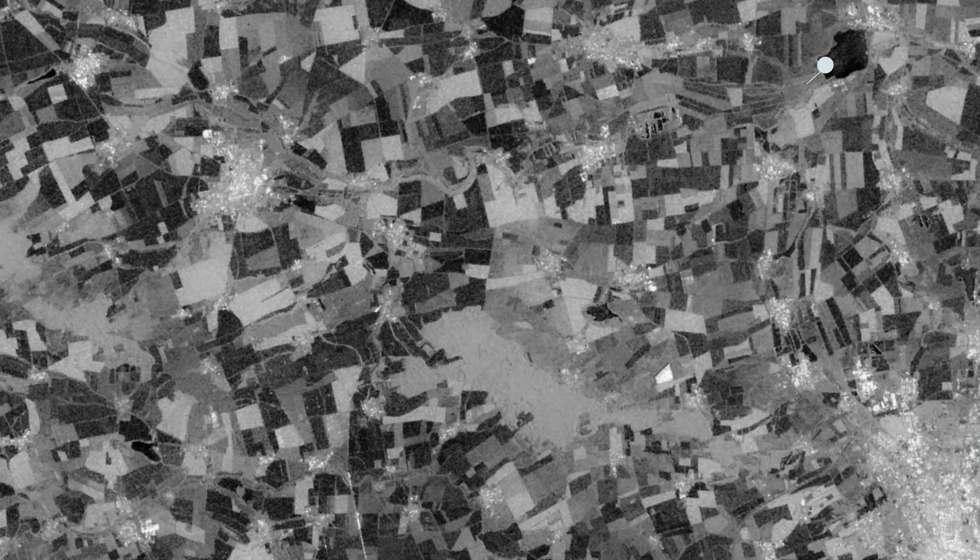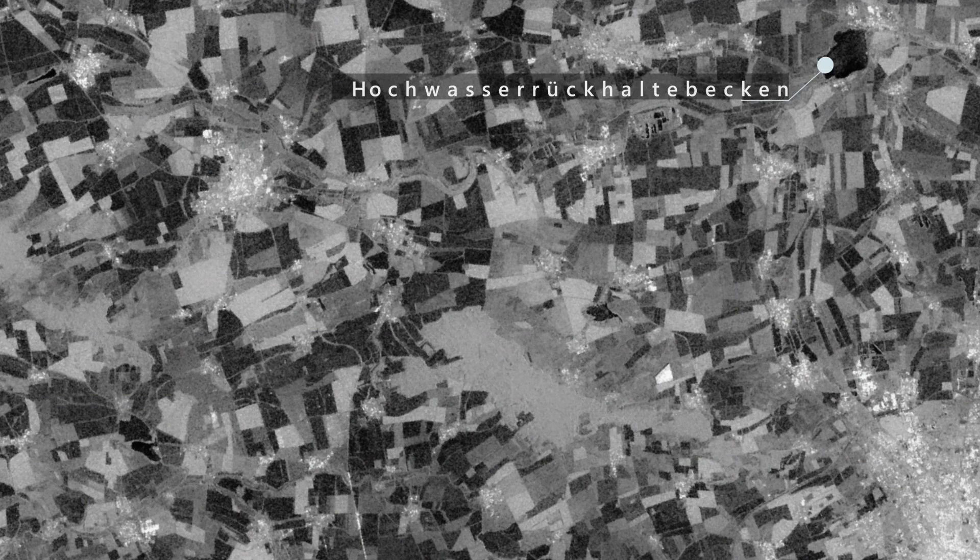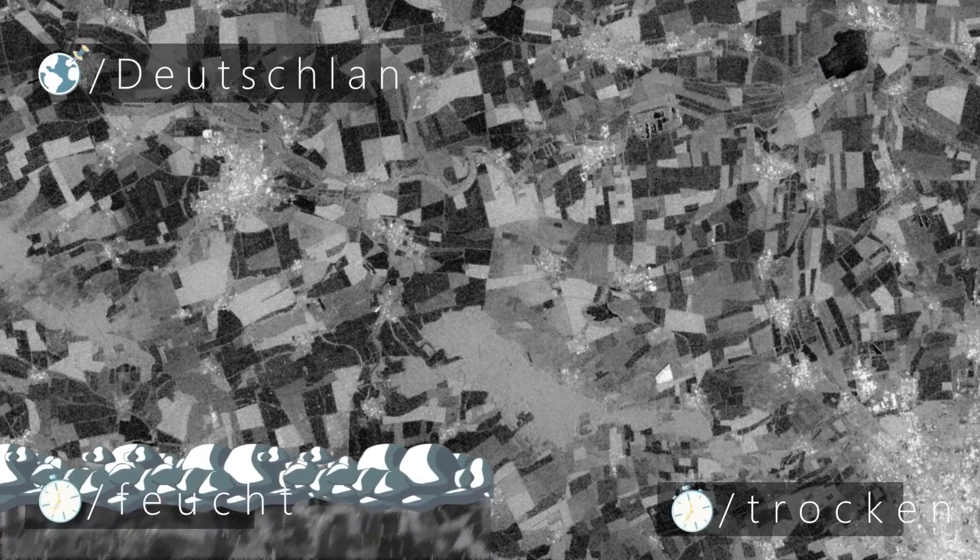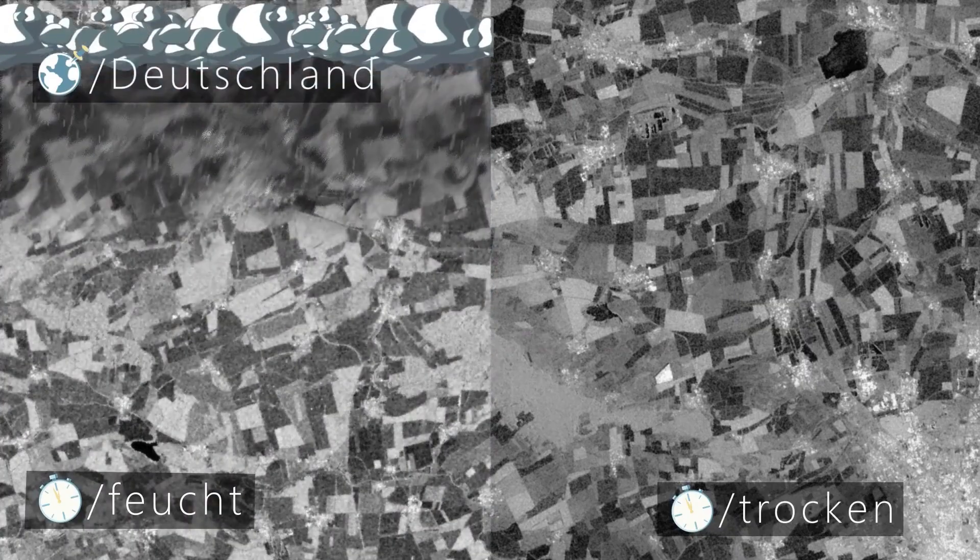However, there are more of these effects. A calm water surface, for example, reflects almost the entire signal in another direction. A moist ground, on the other hand, increases the backscatter.